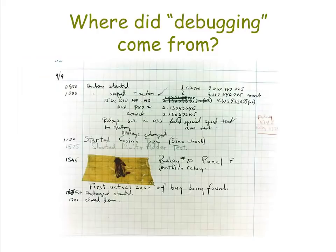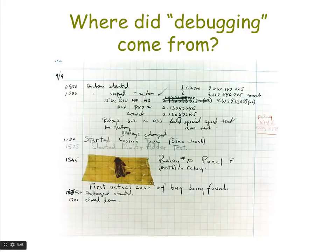You might be wondering where the term 'debugging' comes from. It's popularly attributed in computer science to Navy Rear Admiral Grace Hopper, when she was working on the Mark II computer at Harvard. They actually had a moth in the system, and she made a comment about debugging — removing the bugs from the system. The moth caused the program not to work, so an error became known as a 'bug,' and debugging is the process of removing those errors.